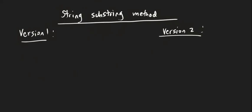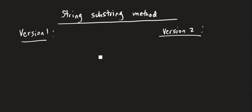First, let me explain what a substring is. A substring takes a portion of a string and can store it in another string. For example, if I have the string 'nyc', I can take only the first two characters and store those in a string or print it out. A substring is basically a portion of a string — that's why the name is substring.